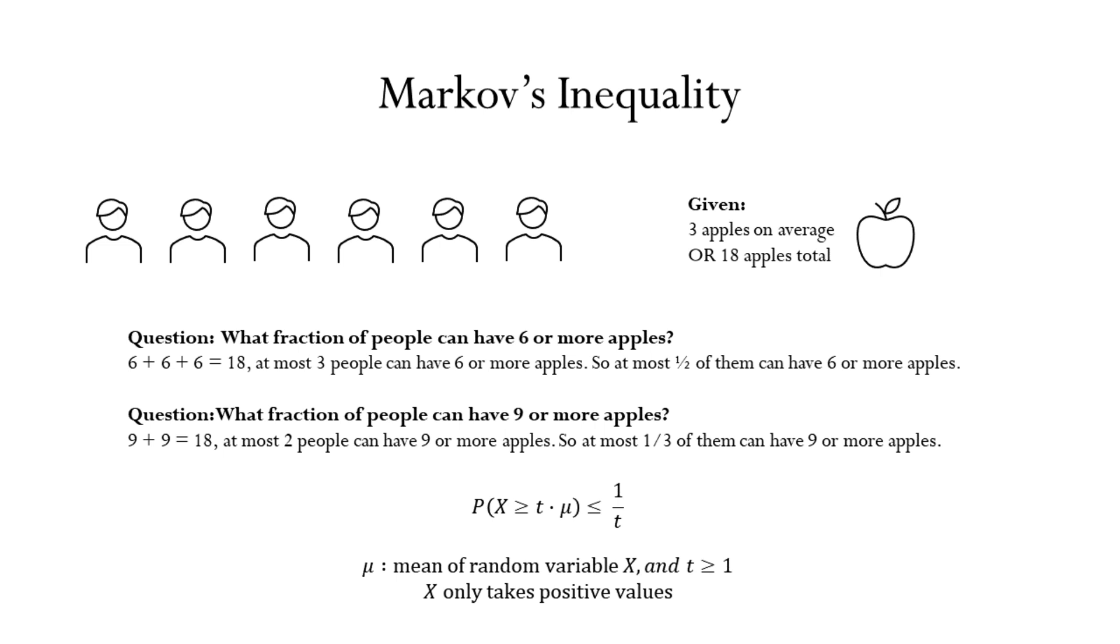A similar question. How many people can have nine or more apples? You can work it out and you'll see that if two people have nine apples, the remaining four people must have zero. And so at most two people or one third of people can have nine or more apples.